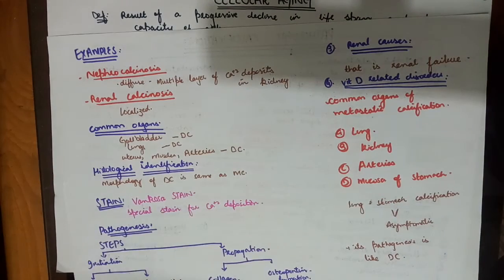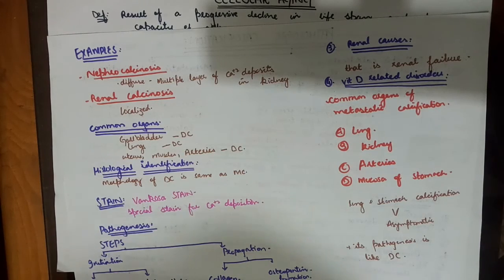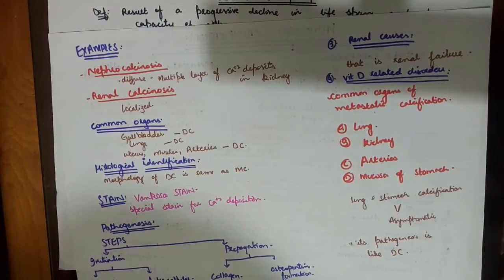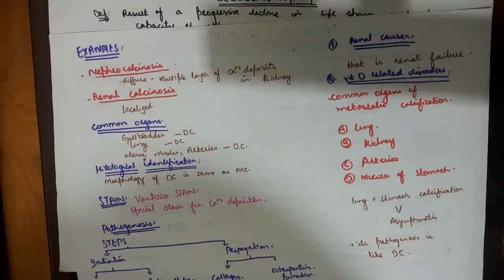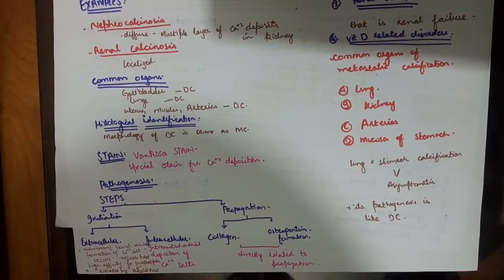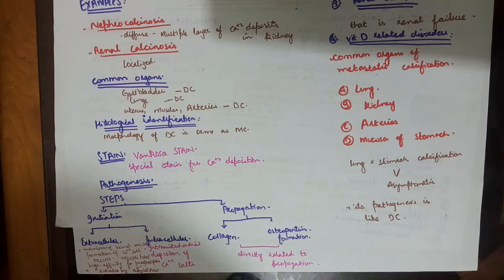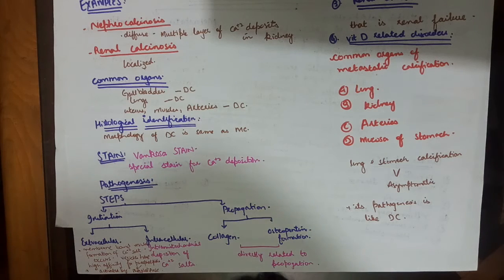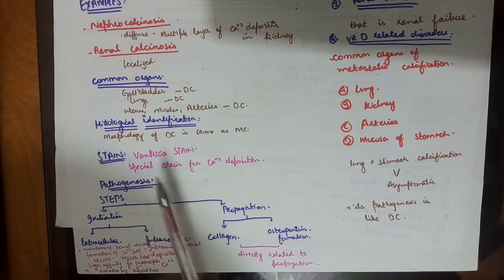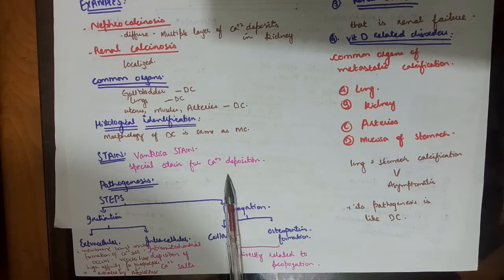Examples of metastatic calcification include nephrocalcinosis, which is a diffuse condition with multiple sites of calcium deposition in the kidney, while renal calcinosis is localized. Common organs affected include the lungs, kidneys, arteries, and uterine muscle. The histological stain used for identifying calcium deposition — in both dystrophic and metastatic calcification — is the special von Kossa stain.